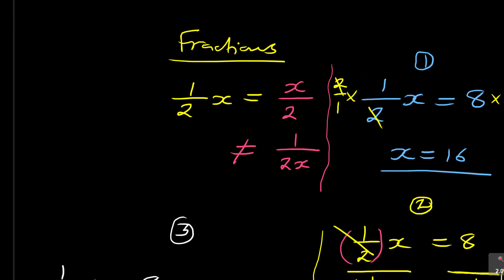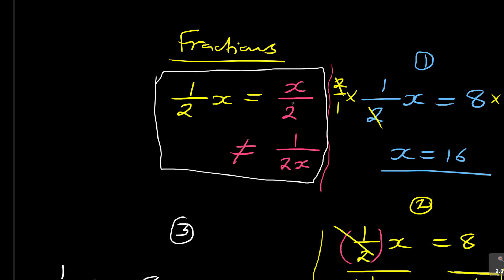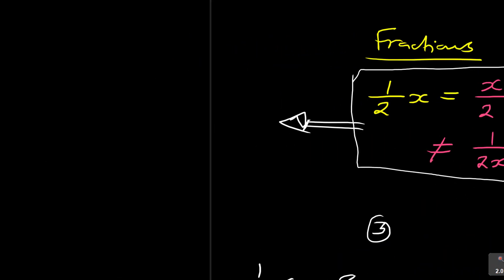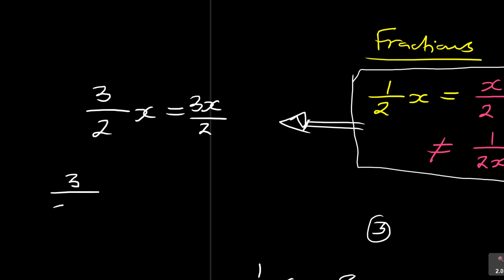Most of the errors come from students not recognizing that 1/(2x) is the same as x/2. So if I give you 3/(2x), that is the same as 3x/2 — the x is on top. This is NOT equal to 3/2 with x separately placed; the x stays at the bottom as part of the denominator.